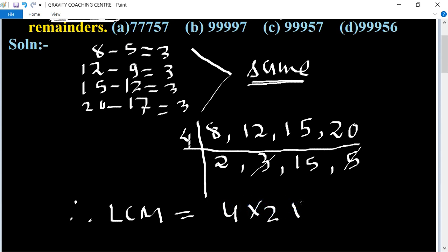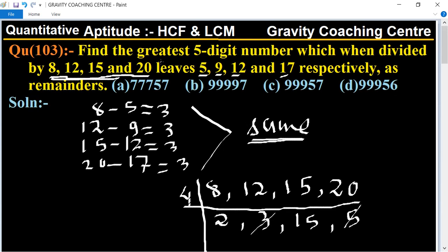Therefore, LCM equal to the product of 4, 2, and 15, so its product is 120. So 120 is a number which is divisible by 8, 12, 15, and 20.